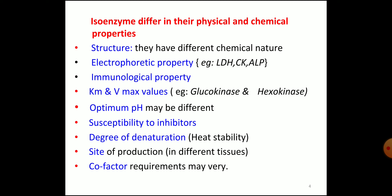Examples of differing KM and VMAX are glucokinase and hexokinase. All enzymes have an optimum pH at which maximum activity occurs, so the optimum pH of isoenzymes may also be different. Their susceptibility to inhibitors may be different. The degree of denaturation — since all enzymes are proteins and may be denatured by heat — heat stability is another property by which we can identify the isoenzyme.